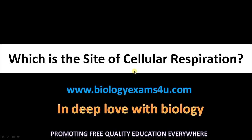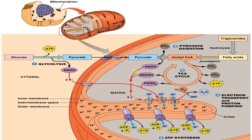Welcome back to Biology Exams4U. Today the topic of our discussion is the site of cellular respiration. As we all know, cellular respiration has three steps: step one is glycolysis, followed by the Krebs cycle, then there is the electron transport chain. The first step — the conversion of glucose to pyruvate — occurs in the cytosol or cytoplasm of the cell.